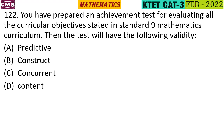The options are: predictive validity, construct validity, concurrent validity, and content validity. Predictive validity refers to the extent to which a score predicts some criterion measure. Construct validity is based on observation or measurement. Concurrent validity refers to the agreement between two different assessments. Content validity covers all aspects and all curricular objectives. The correct answer is option D — content validity.